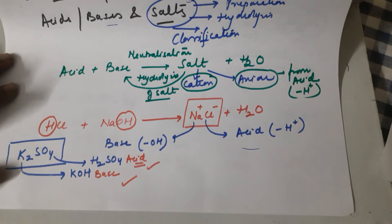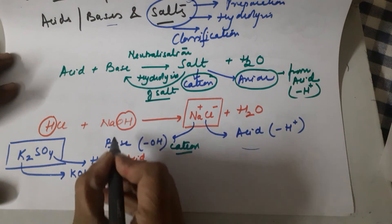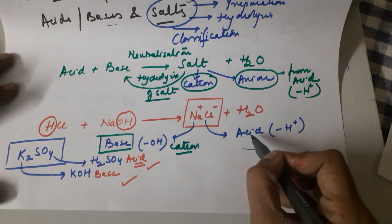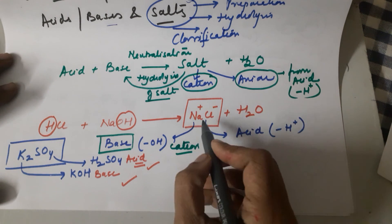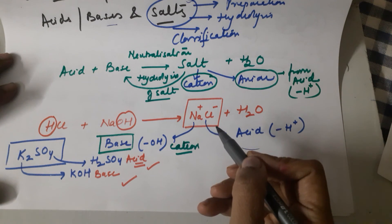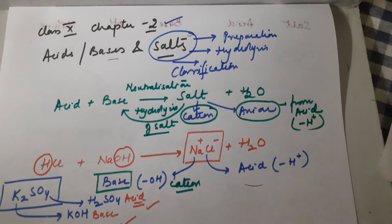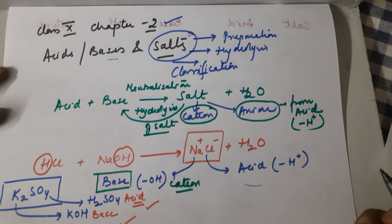Quick recap: from any given salt, the first part is the cation — add OH⁻ ions and it becomes a base. To the anion, add H⁺ and you get the acid. This way, for any salt you can identify the parent acid and base, and determine the nature and pH of the salt. I hope you understand the concept of salts. Do well in your board exams, stay safe, and take good care of yourselves. Bye!